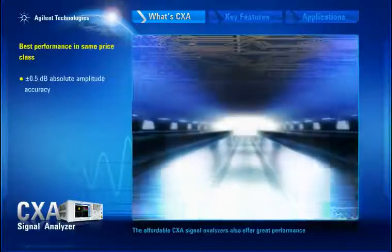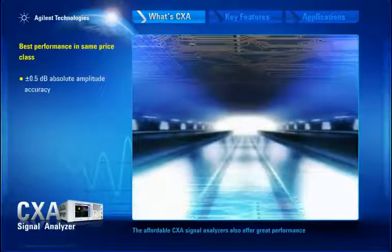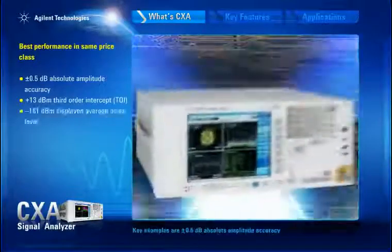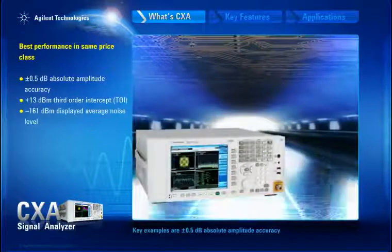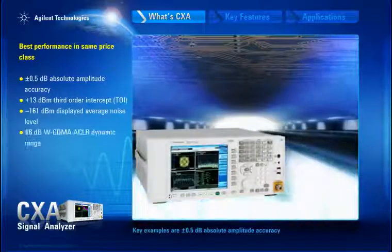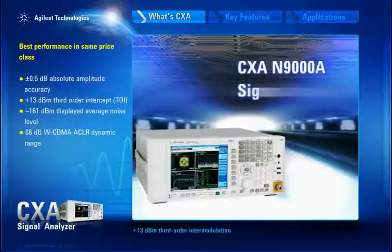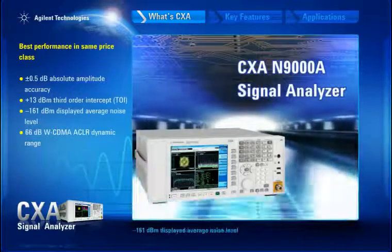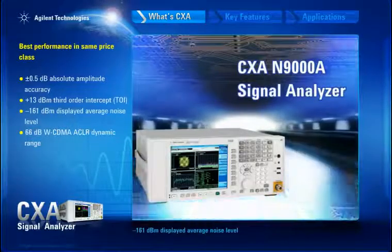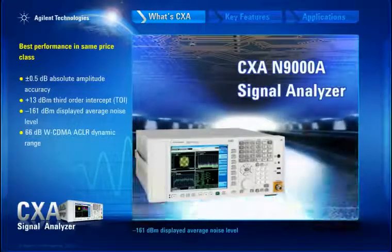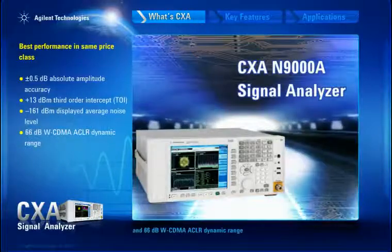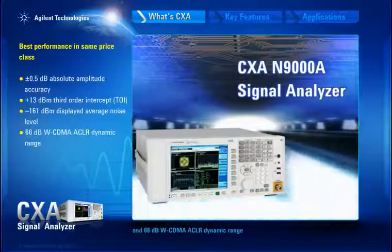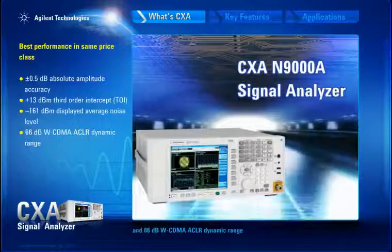Affordable CXA signal analyzers also offer great performance. Key examples are plus or minus 0.5 dB absolute amplitude accuracy, plus 13 dBm third order intermodulation, minus 161 dBm displayed average noise level, and 66 dB WCDMA ACLR dynamic range.